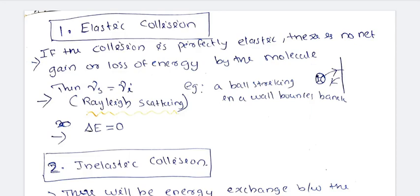In elastic collisions, there will be no gain or no loss of energy. Delta E is equal to zero, and νs is equal to νi. That is why we call it Rayleigh scattering.